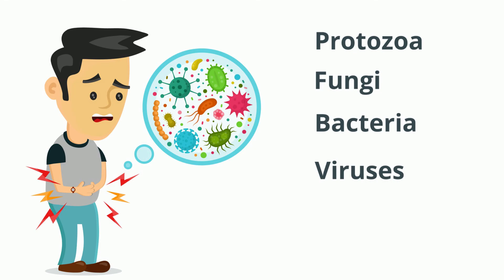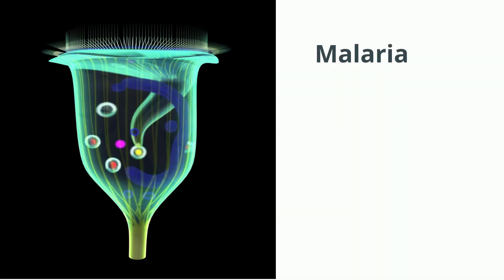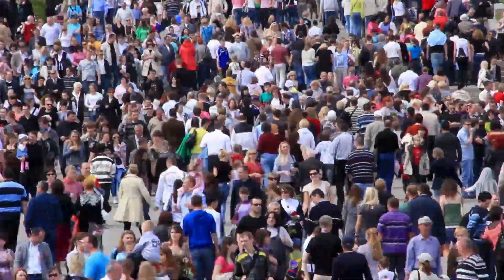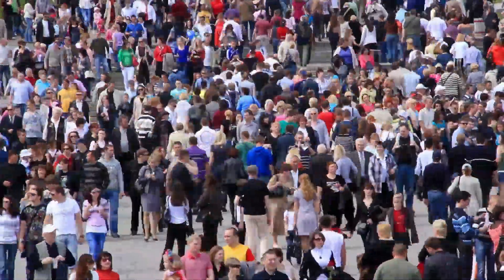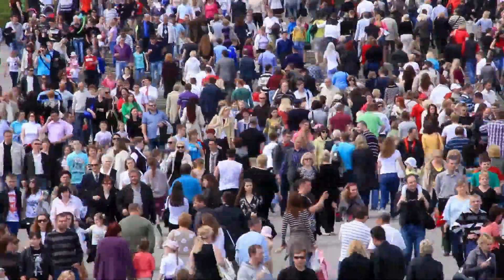Protozoa are single-cell organisms that live in moist areas including water. They are some of the reasons why clean water is so important. They cause a host of diseases including Malaria, Giardia, Sleeping Sickness, and Nausea, just to name a few, and impact up to a billion people annually. The good news is that there is a host of drugs to treat these illnesses, including doxycycline.